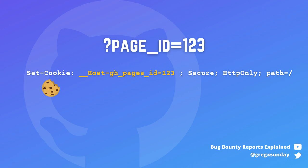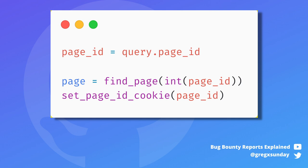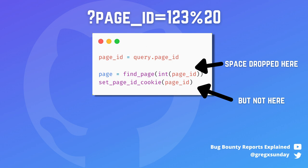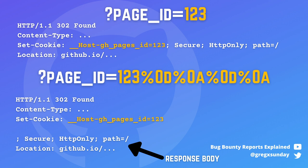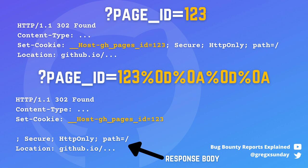In step 5, the value from the parameter page ID is being put into the GitHub Pages ID cookie. Page ID is an integer number — it identifies the page to which the user will be redirected after the authentication flow. The page lookup converts the cookie to an integer. So if your page ID is 123 with a space at the end, the space will be dropped by integer conversion. But importantly, the cookie sent back to you is the one before the int conversion, so with the space at the end. You could inject %0d and %0a there, as they were ignored by integer conversion. Those are the CRLF characters that mean a new line.